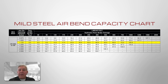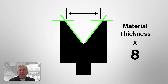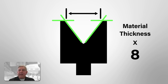That one and one-eighth inch V opening comes from a simple calculation: take your material thickness and multiply it times eight. This holds true for mild steel, stainless steel, and aluminum. High strength steels can be a little different, and we can discuss that further. So that covers the V opening and the basic tonnage calculations.